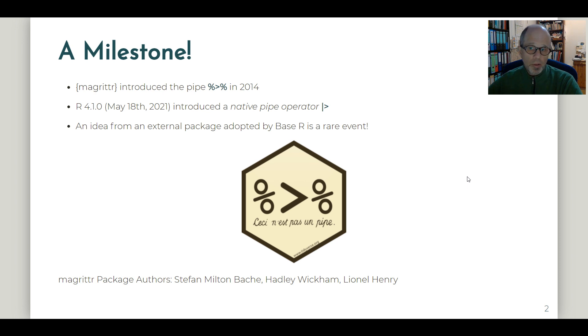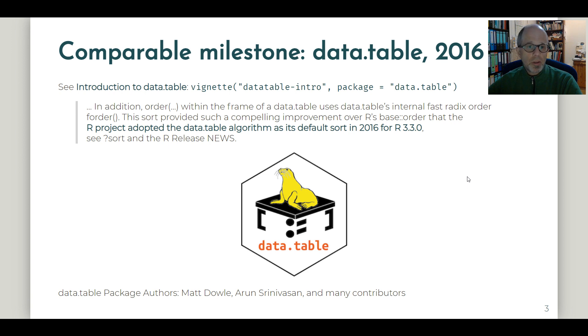But I think it's also a success for the whole Tidyverse team. Now I don't want to get into any arguments Tidyverse versus DataTable for example. So I'd just like to note that DataTable achieved a similar milestone a couple of years ago. In 2016 when DataTable's internal fast radix order was adopted by the R project and became the default sort algorithm in R version 3.3. So a shout out to DataTable's package authors Matt Dowle and Arun Srinivasan and note that there are a lot of contributors to DataTable as well.